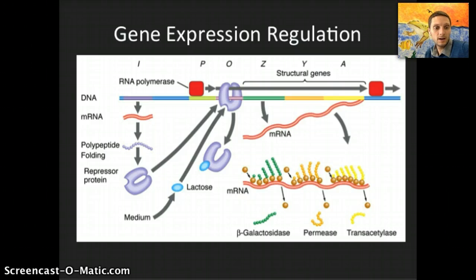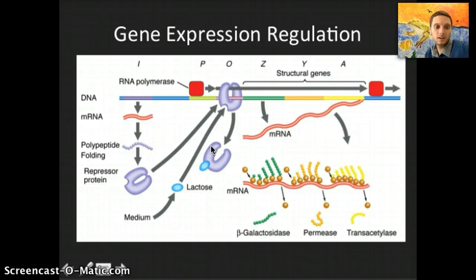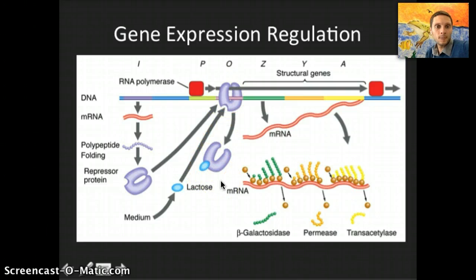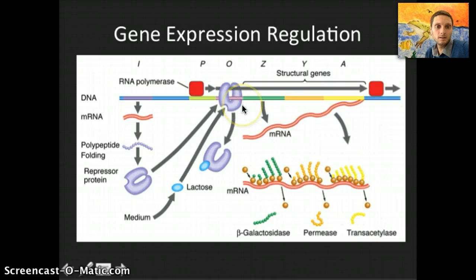Once the lactose is broken down, the repressor protein is reactivated and stops the expression of the lactose metabolism genes. So it's the presence or absence of lactose — represented by the small blue circle — that turns the repressor protein on or off. In the absence of lactose, the repressor stays on the DNA and blocks transcription of that messenger RNA.